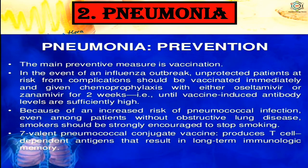Preventive measures for pneumonia: the main preventive measure is vaccination. During an influenza outbreak, unprotected patients at risk should be vaccinated immediately and given chemoprophylaxis with either oseltamivir or zanamivir for two weeks until vaccine-induced antibody levels are sufficiently high. Smokers should be strongly encouraged to stop smoking due to increased risk of pneumococcal infection. The 7-valent pneumococcal conjugate vaccine produces T-cell dependent antigens resulting in long-term immunologic memory.